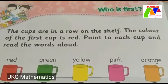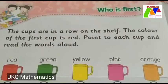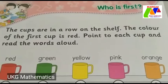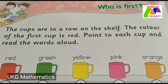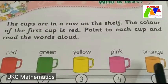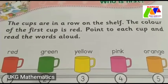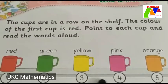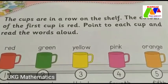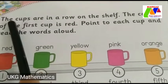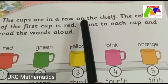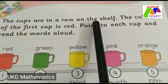Who is first? All of you take page number 110. Here we can see different colors of cup. In this chapter, we will discuss about the position of these cups. The cups are in a row on the shelf.